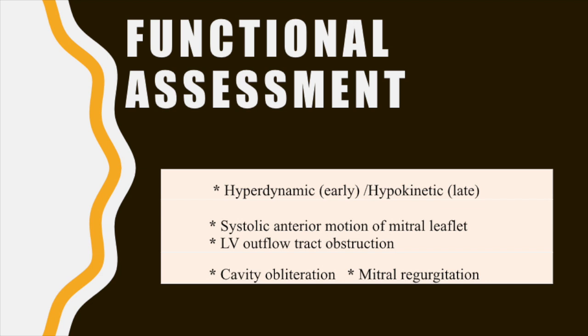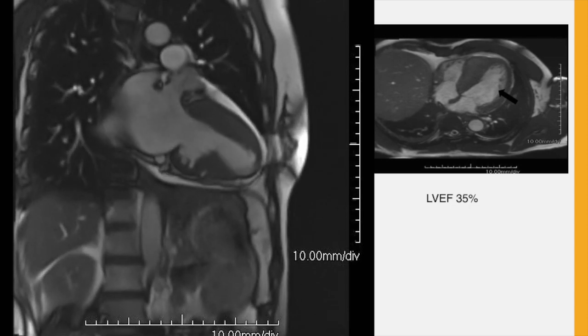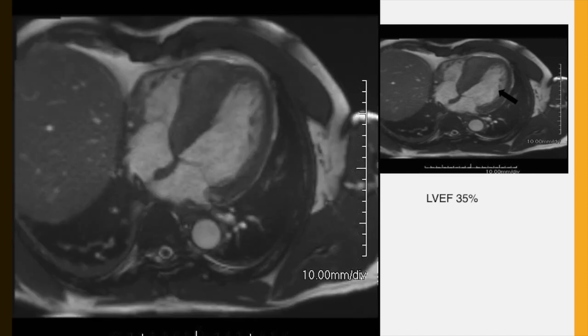Once the morphological assessment is done, functional assessment is the next step on CMR. LV systolic function can be accurately assessed on CMR using semi-automated functional assessment software. HCM is known to notoriously cause hyperdynamic systolic function in the early course of the disease but progresses to systolic dysfunction later on. Other functional parameters of HCM include systolic anterior motion of the mitral leaflet, left ventricular outflow tract obstruction, cavity obliteration, and mitral regurgitation. Here are examples of three different patients with hyperdynamic as well as hypokinetic LV functions in patients with myocardial hypertrophy. The first two patients had HCM; the last patient turned out to have an entirely different diagnosis, which will be disclosed in the second part of the tutorial.